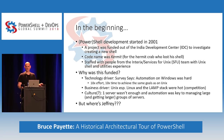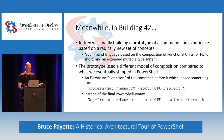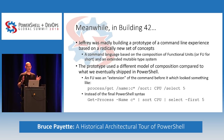There's one important thing missing from that story — a certain gentleman, Jeffrey. He wasn't actually involved in the shell project at the time. However, he was over in building 42, madly prototyping a new type of command line based on a radically different set of concepts: a command line based on the composition of functional units, or FUs for short, within an extended mutable type system. So you could describe a command line as being FU, FU, FU, and really get your anger out.